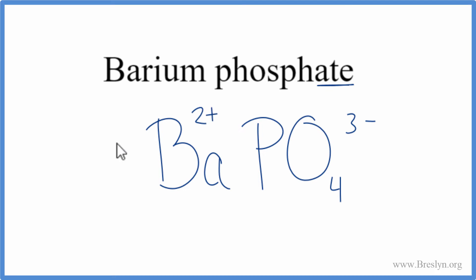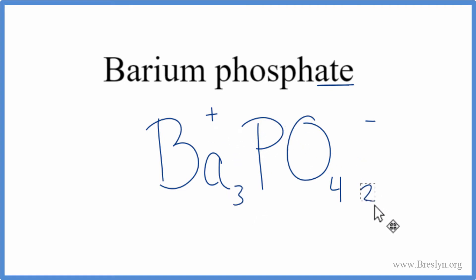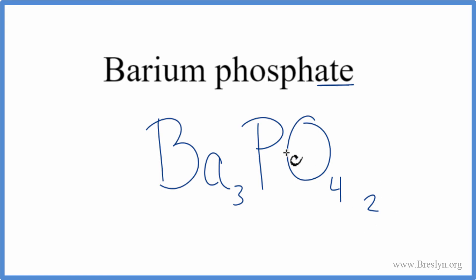We can use something called the crisscross method to make that happen. We can change the subscripts — we'll move the 3 here and the 2 out here. Then we need to put parentheses around the phosphate, since it's a polyatomic ion and we have two of them. This gives us the formula for barium phosphate.